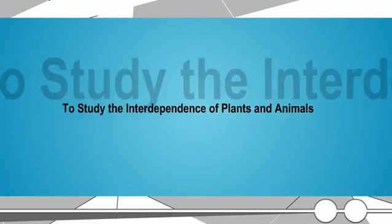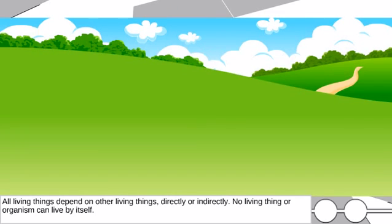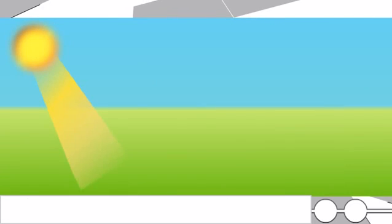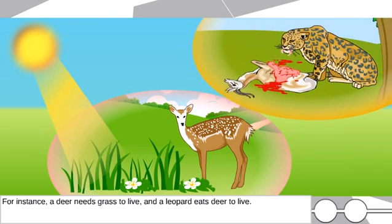To study the interdependence of plants and animals: all living things depend on other living things, directly or indirectly. No living thing, or organism, can live by itself. For instance, a deer needs grass to live, and a leopard eats deer to live.